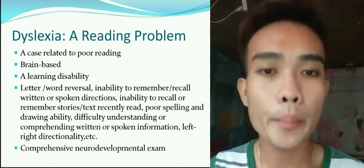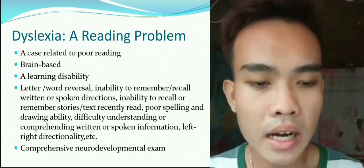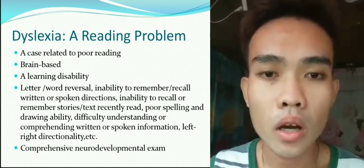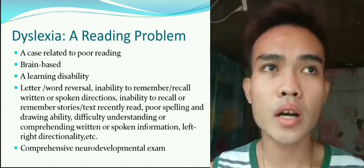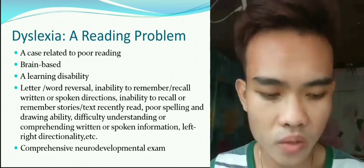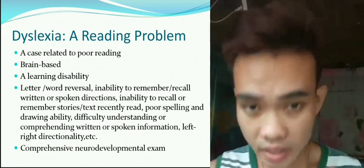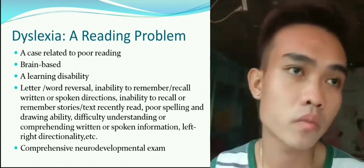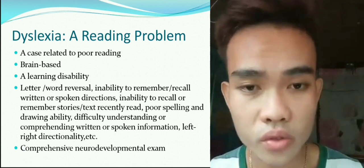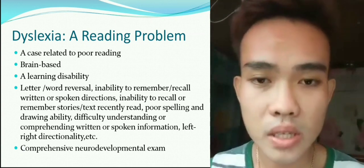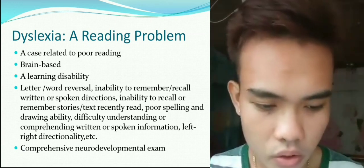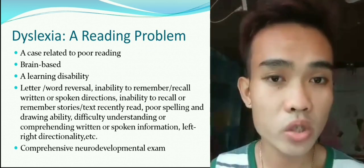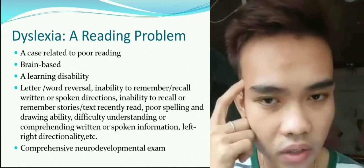Dyslexia is a reading problem — a case related to poor reading. There are lots of people in this world, even in our country, who have difficulties in reading. It is brain-based, meaning it is based on our cognitive thinking. It is a learning disability. Characteristics include letter or word reversal — for example, the letter B may appear as P when twisted. Inability to remember or recall — difficulty memorizing or recalling words that were just read.